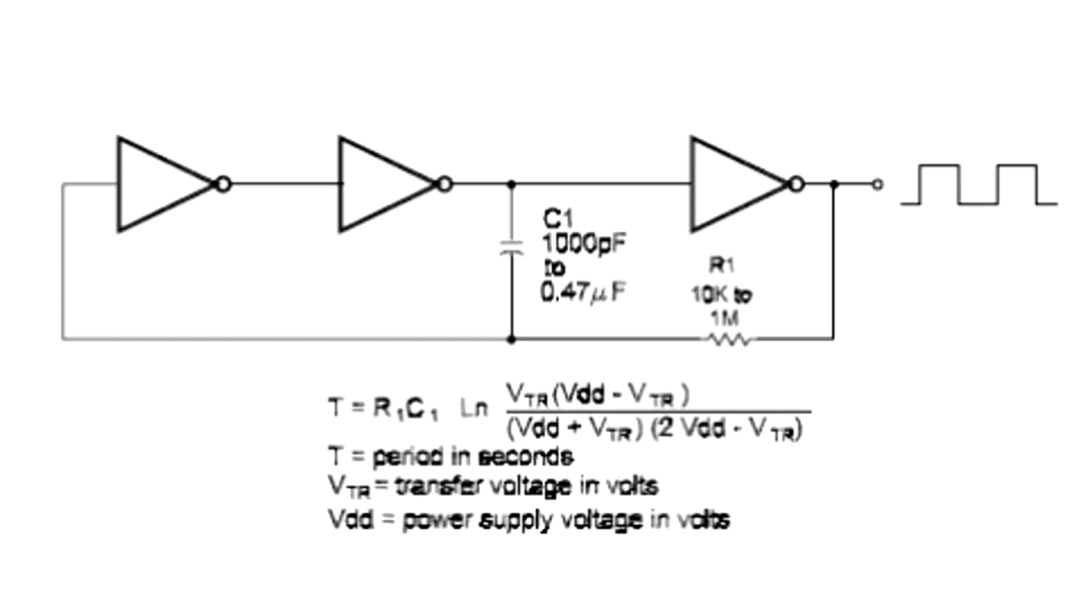Normally when you make a ring oscillator you'd have a resistor and a capacitor between each stage to slow down the transitions between high and low, and thereby setting the oscillation frequency.